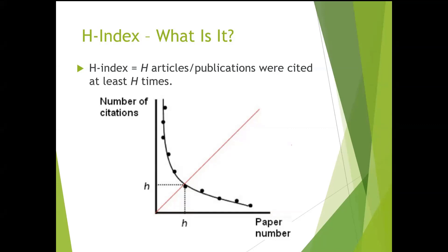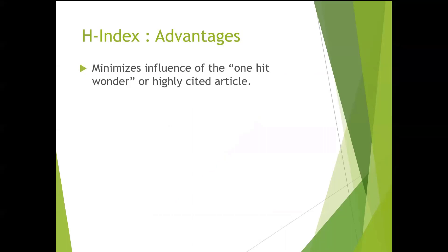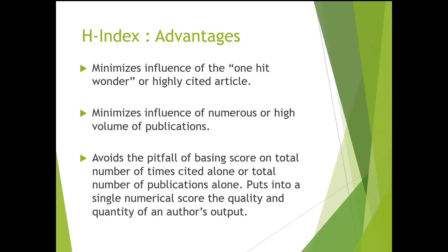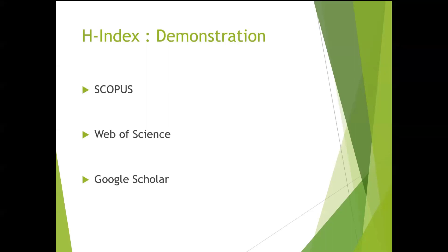So simply put, the H-Index is based on the distribution of citations received by a given researcher's publications. So a scholar with an index of H has published H papers, each of which have been cited in other papers at least H times. So to repeat, the H-Index reflects both the number of publications and number of citations per publication. One thing to keep in mind with the H-Index is that it works properly only for comparing scientists or authors in the same field, because citation conventions differ widely among different fields.